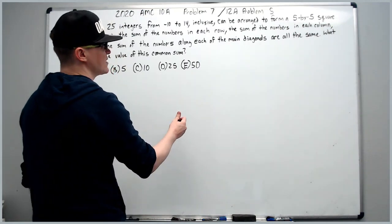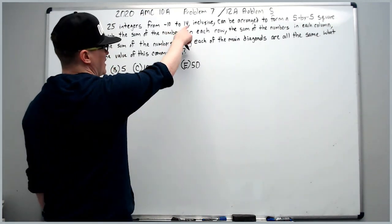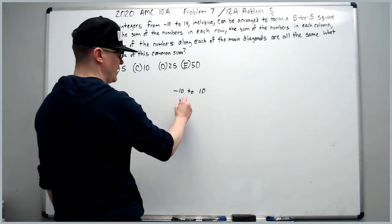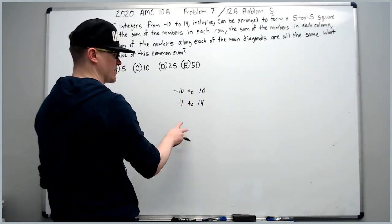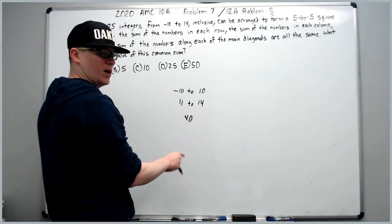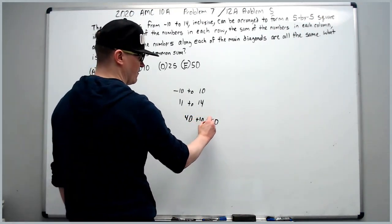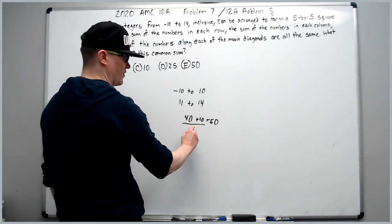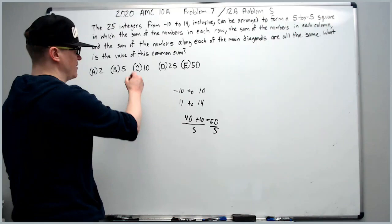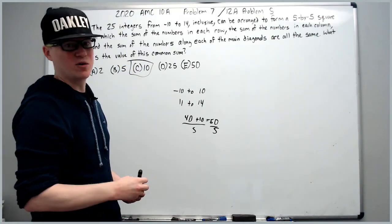So we can just say that from negative 10 to positive 10, the sum is zero. We really need to add 11 to 14, which is four tens, which is 40, and the sum of one through four, which is also 10 to get 50. And then we can just divide that by five. That's the net sum of the whole thing. It must be that there's 10 in each row and column.